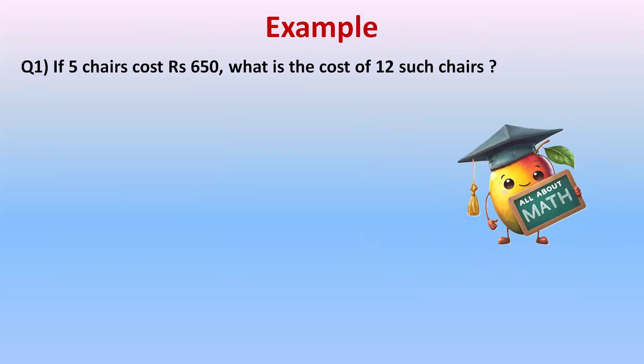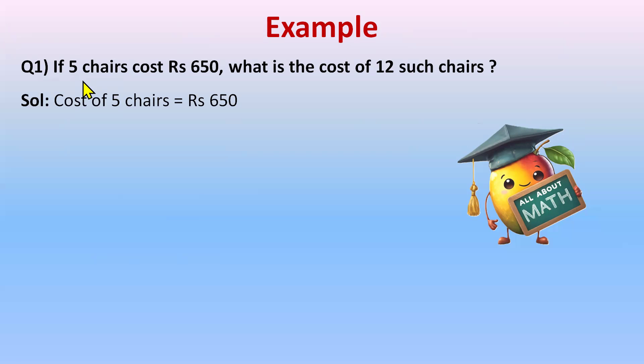If five chairs cost rupees 650, what is the cost of 12 such chairs? If five chairs cost this much, to find the cost of 12 chairs, we first need to find the value of one chair. The first statement will be: cost of five chairs is rupees 650. Once we have the cost of one chair, we can easily find the cost of 12 chairs.